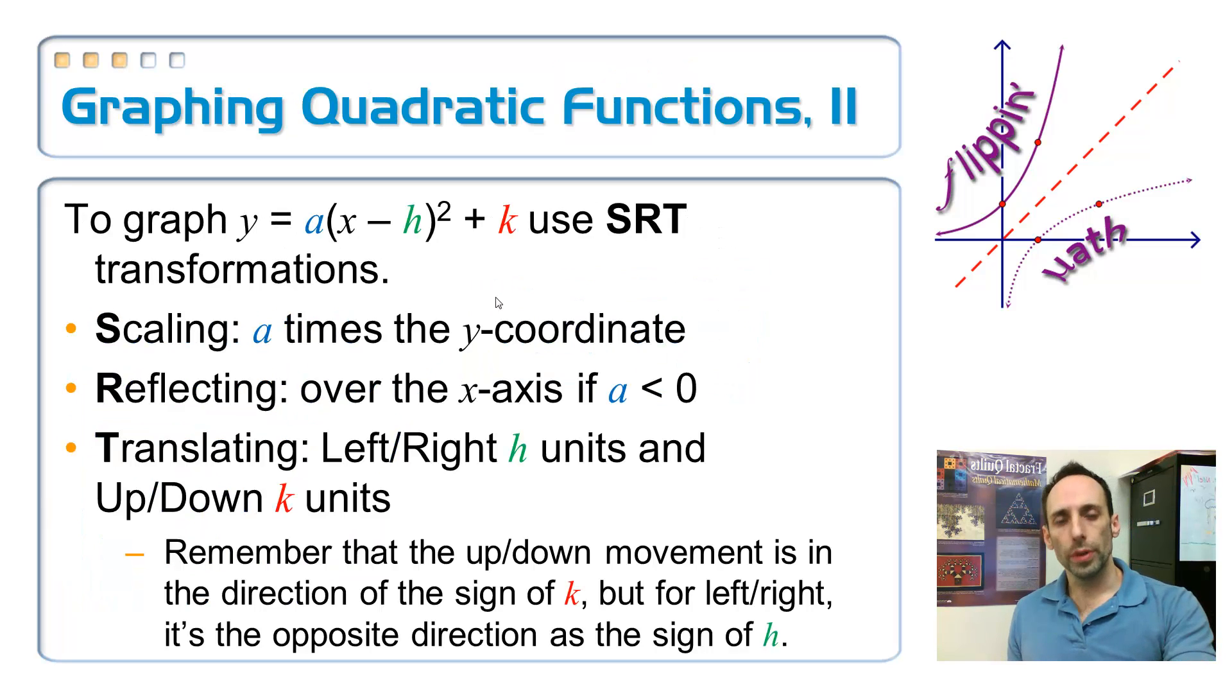So now let's graph some of these quadratic functions when they're in vertex form. Really easy because it already gives you the vertex, right? So you'd know where that point is. And then we can just use SRT transformations on it. Scaling happens from taking the a value and multiplying it times the y-coordinates of the parent function. Reflecting across the x-axis only happens if your a value is negative. And then translating.